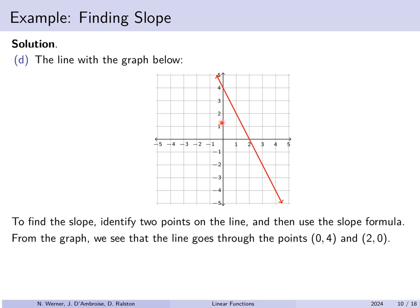The point (0, 4) has x-coordinate 0 and y-coordinate 4. The point (2, 0) also looks good — try to find points with nice whole numbers rather than guessing coordinates. Using those two points, we take the difference of the y-coordinates, 0 minus 4, over the difference of the x-coordinates, 2 minus 0, which works out to negative 2. This line has slope negative 2.